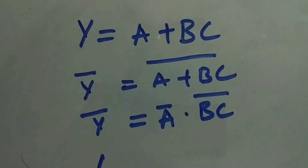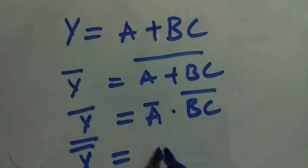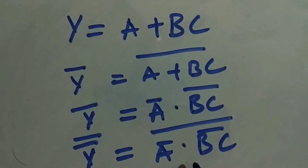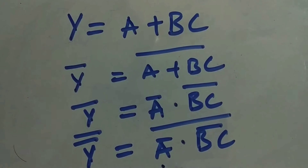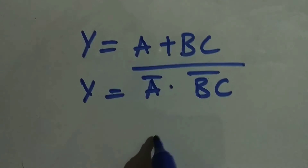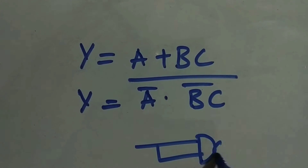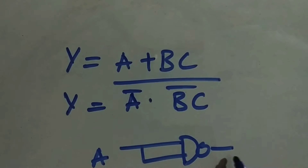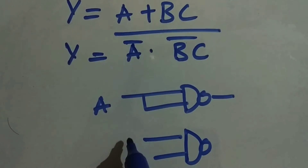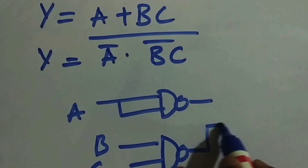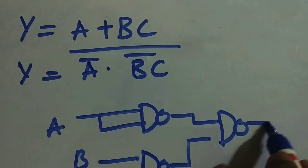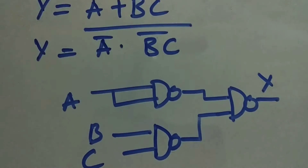To get Y, we complement one more time: Y equals A bar dot BC whole bar, whole bar. Now A bar will be implemented using a NAND gate — a single-input NAND (as inverter). Then B and C are given as inputs to another NAND gate for BC whole bar. These two outputs are given as input to a final NAND gate to produce Y.